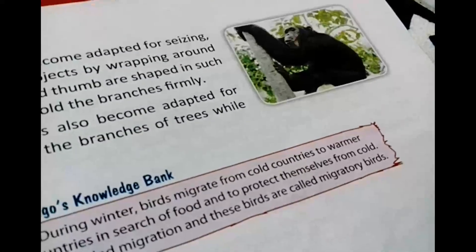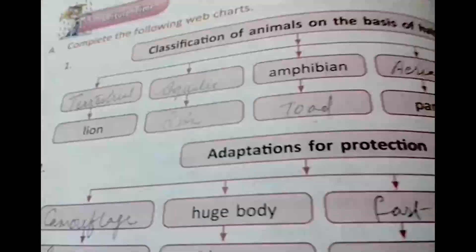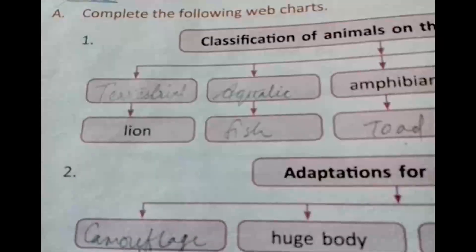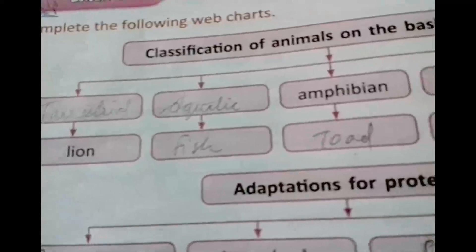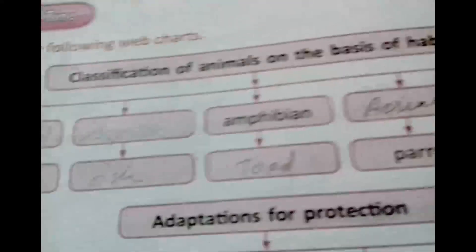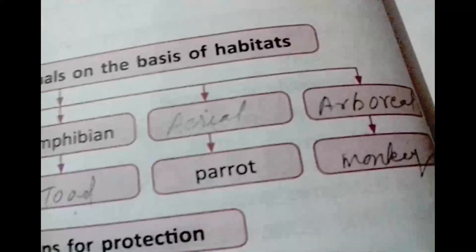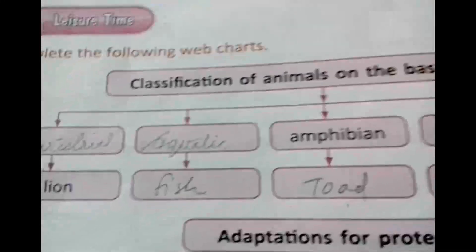So students, I hope you have understood about the adaptations and their types — terrestrial, aquatic, amphibian, aerial, and arboreal. Here we can see a web chart showing classification of animals on the basis of habitats: terrestrial example is lion, aquatic example is fish, amphibian example is toad, aerial example is parrot, arboreal example is monkey.